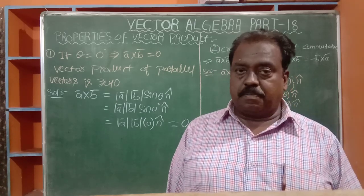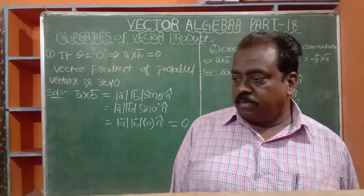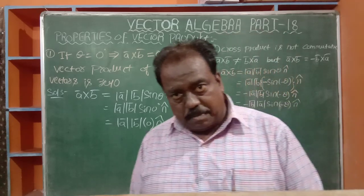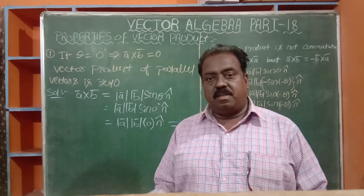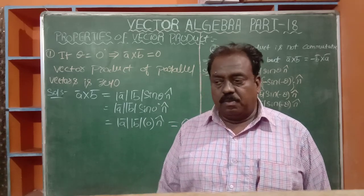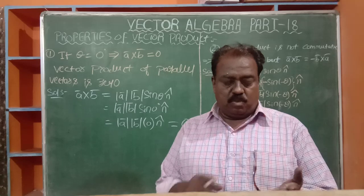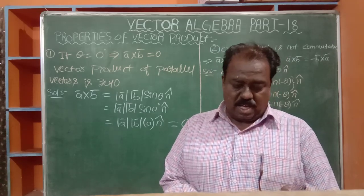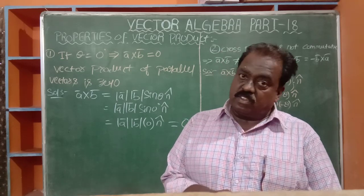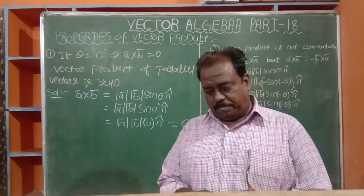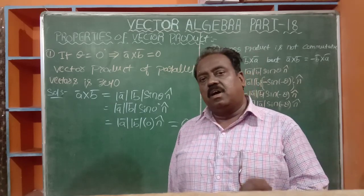Part 18 is the vector product of two vectors. We already completed the dot product; now we are in the cross product. The vector product of two vectors, A-bar and B-bar, is a vector — that is why it is called a vector product. It is denoted as A-bar cross B-bar, and defined as |A-bar| |B-bar| sin θ n-cap.